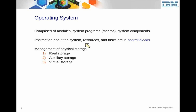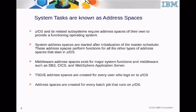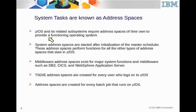Virtual storage goes from zero to some contiguous number in 4K chunks that have to be managed. An address space is a contiguous area. The operating system itself is a group of address spaces. System address spaces are started after initialization of the master scheduler, and then the master scheduler gets involved in starting the other system address spaces.